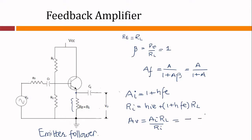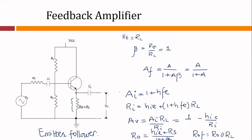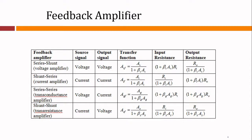The voltage gain equals 1 minus hie divided by Ri. The output resistance R0 equals (hie + Rs) divided by (1 + hfe), and the output resistance with feedback R0f equals R0 in parallel with RL. These are the different combinations: voltage series feedback, voltage shunt feedback, current series feedback, and current shunt feedback. Series feedback connections tend to increase the input resistance, while shunt feedback connections tend to decrease it. Voltage feedback tends to decrease the output resistance.